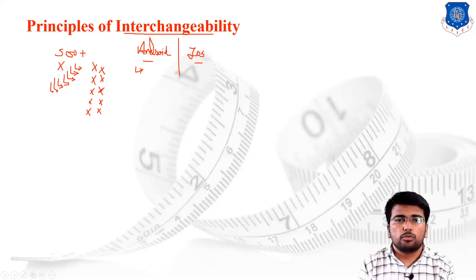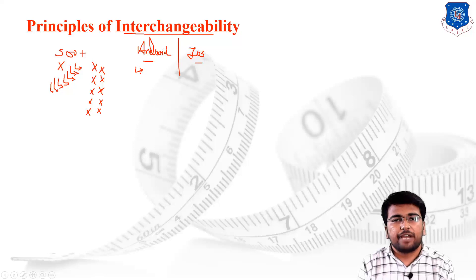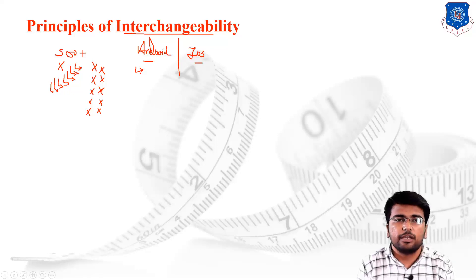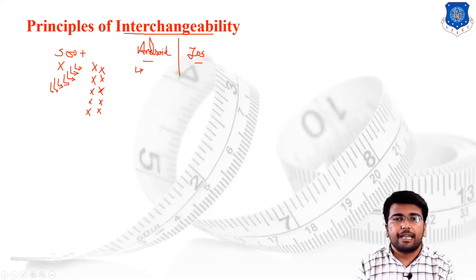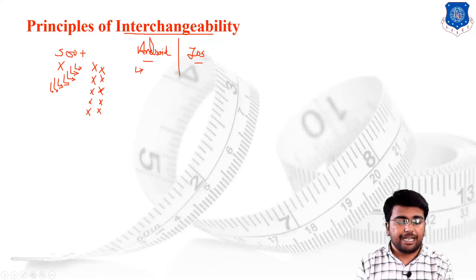Suppose you are servicing a fan at home. The fan contains bearings from a specific company. After 5 to 10 years, if you need to replace those bearings, it is not necessary to purchase the exact same brand bearing. You can purchase locally available bearings and they will directly fit and work properly. This concept is known as interchangeability — you can interchange components and parts at the time of assembly and they will work properly.